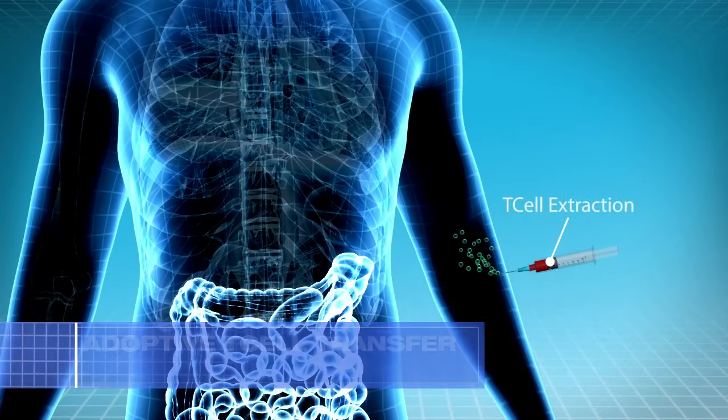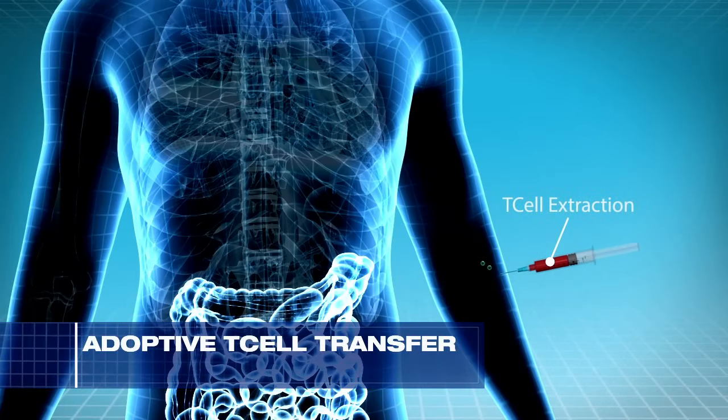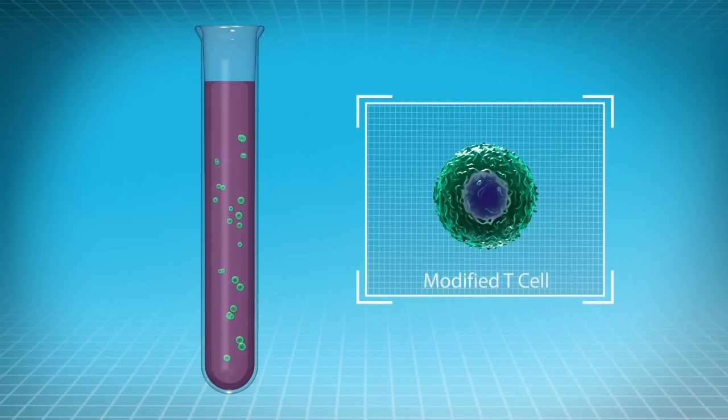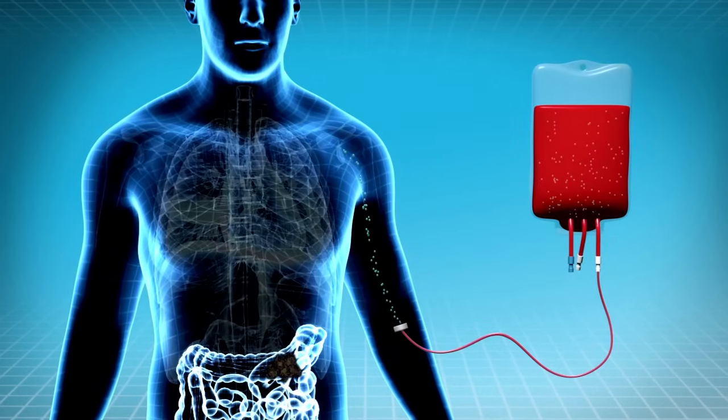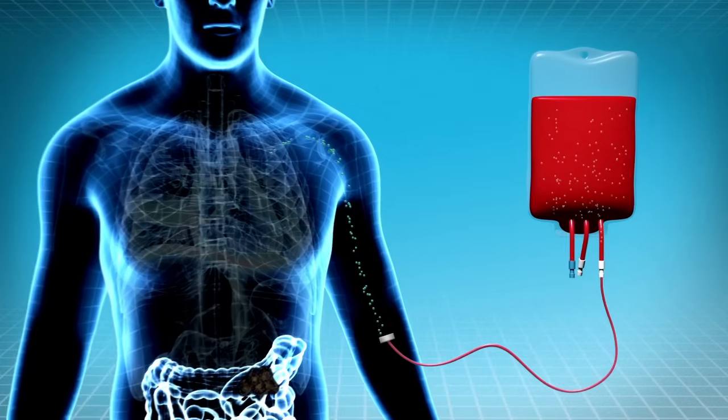Another enhancement approach is adoptive T cell transfer, where T cells are taken out of the patient's body, grown in the laboratory, and educated to recognize cancer or even modified to become much stronger. These fighter cells are then transferred back into the patient.